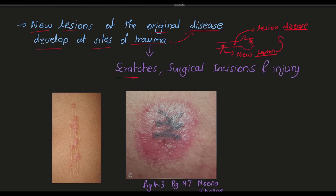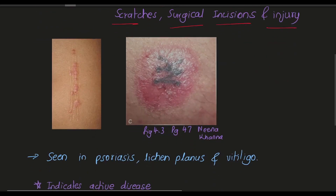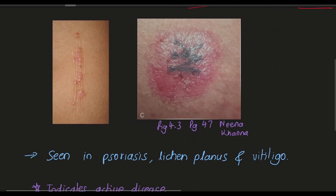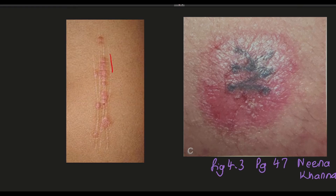The types of trauma that can cause Koebner's phenomenon include scratches, surgical incisions, or any type of injury at that site. Here you can see scratching marks and lesions have developed right at those marks.